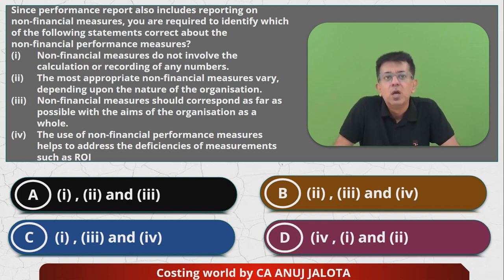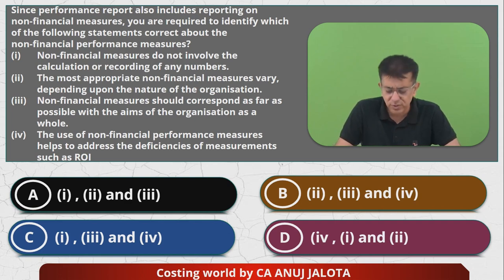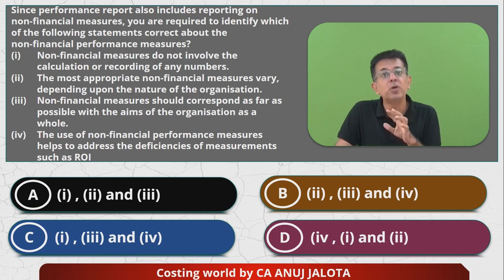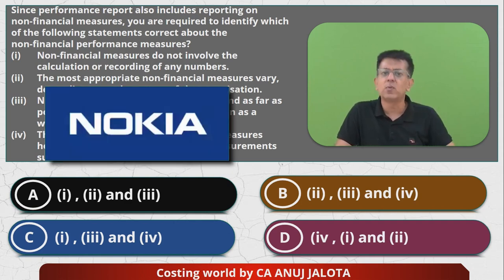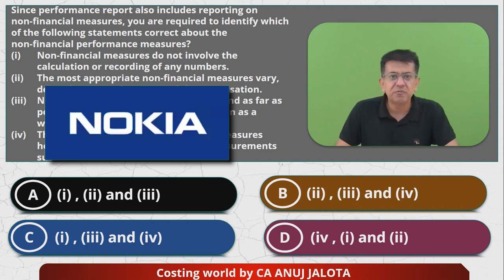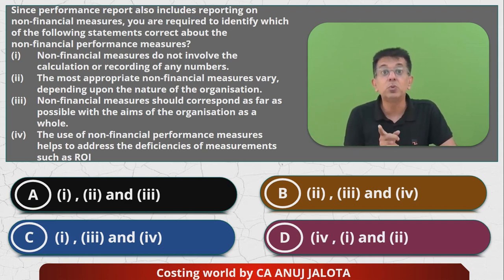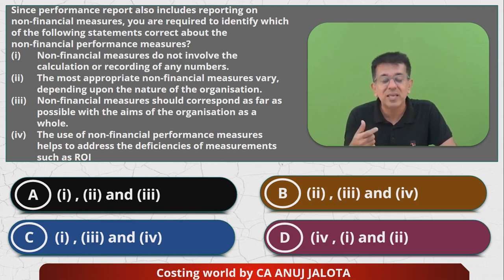Point four: the use of non-financial measures helps to address the deficiencies of measurements such as ROI — return on investment. All financial measures have one disadvantage: they focus on short-run profits, and doing well financially does not mean you will always do great. For example, Nokia at one point was the market leader with superb profits and ROI, but they failed because they did not innovate. They should have measured how many new things they were producing — those are non-financial indicators.